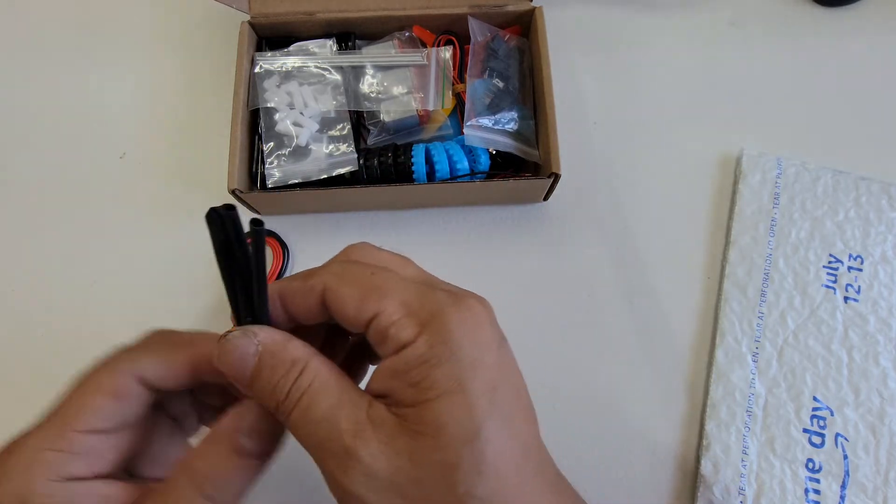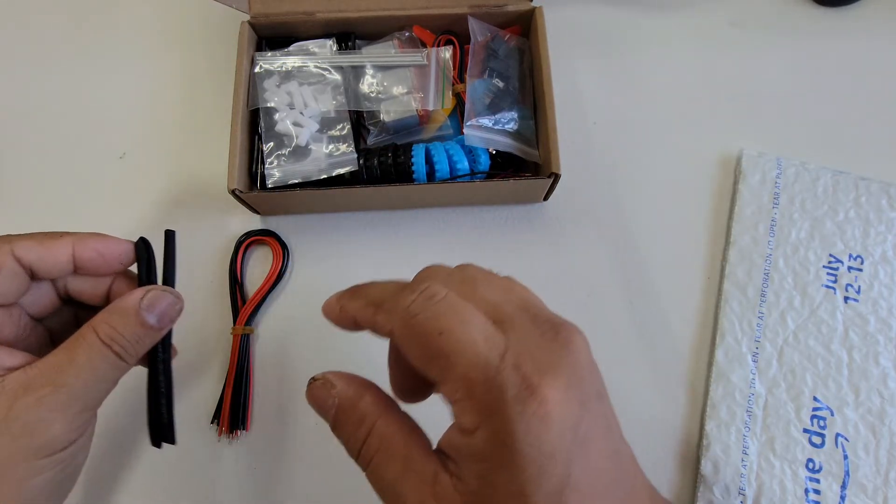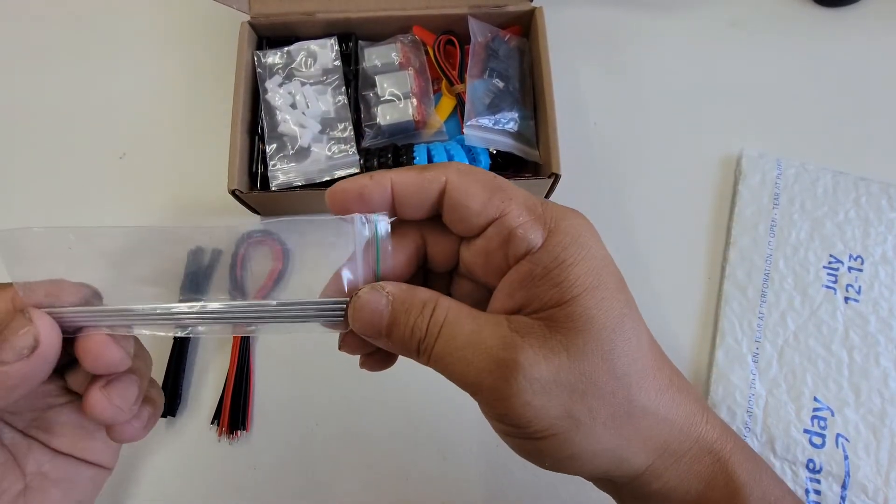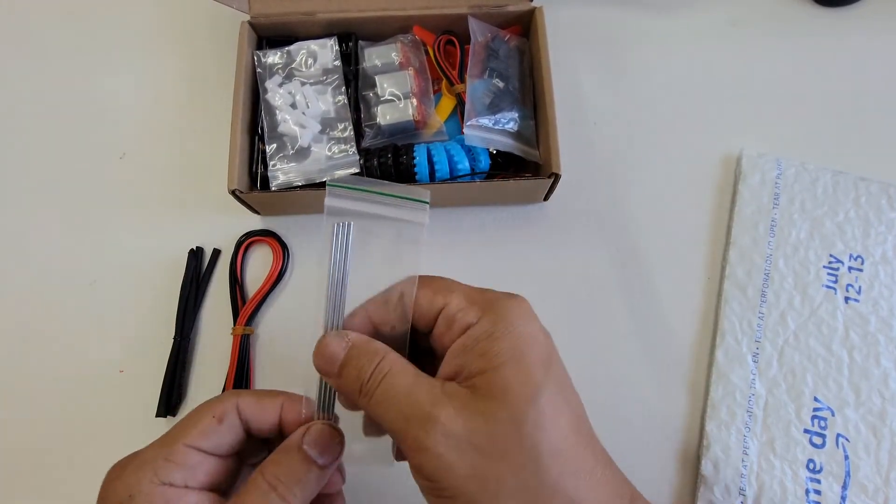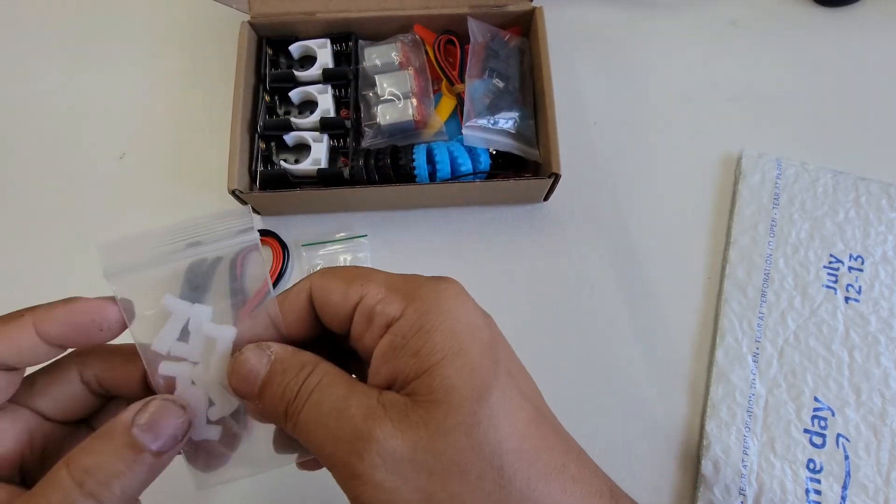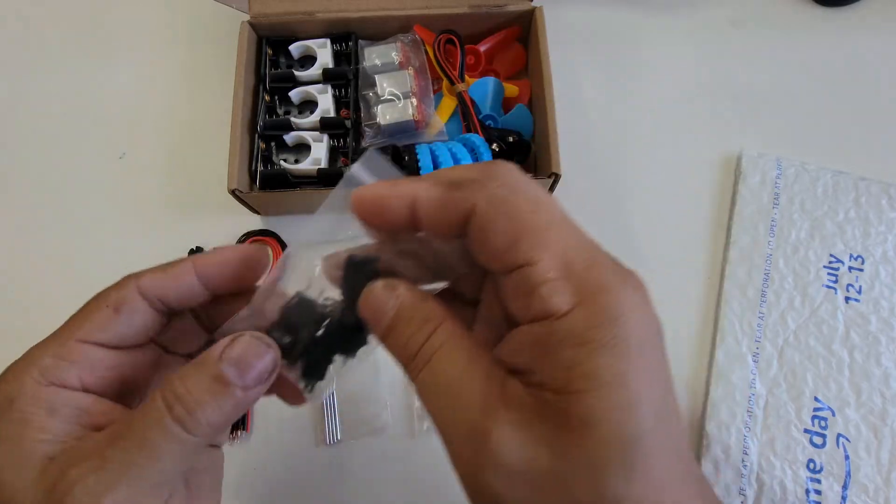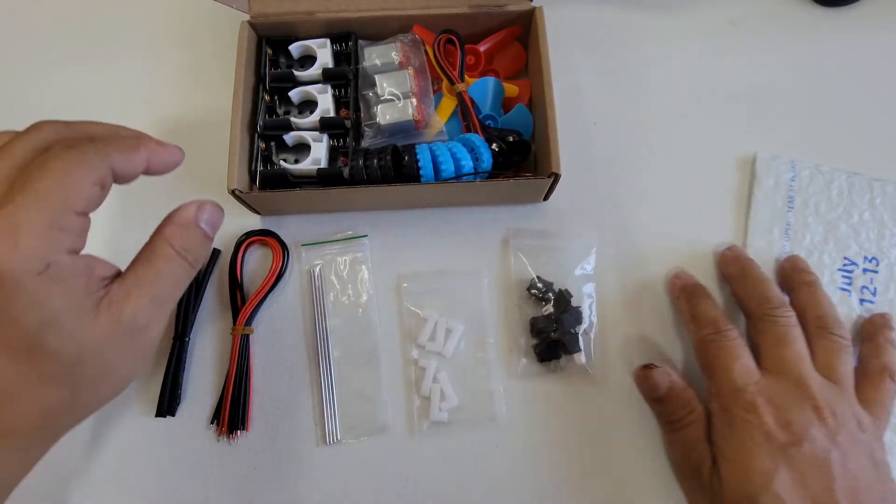Some shrink wrap, I think that's what they call it, where you melt it and then it shrinks itself. So that's what we have here. Some metal rods. I have no idea what this one is. And a couple of switches right here.